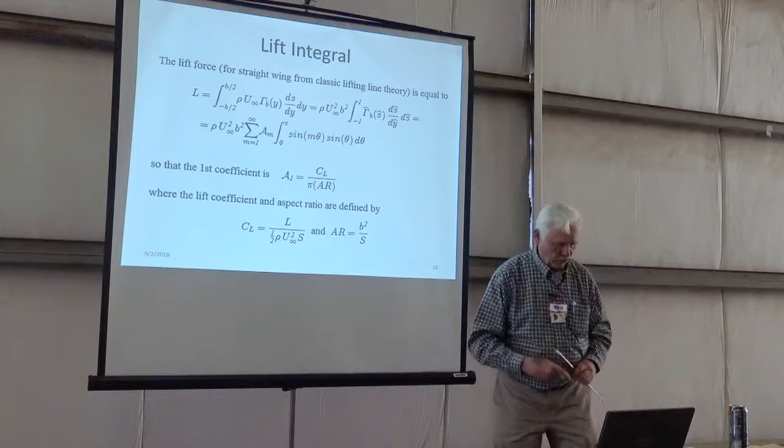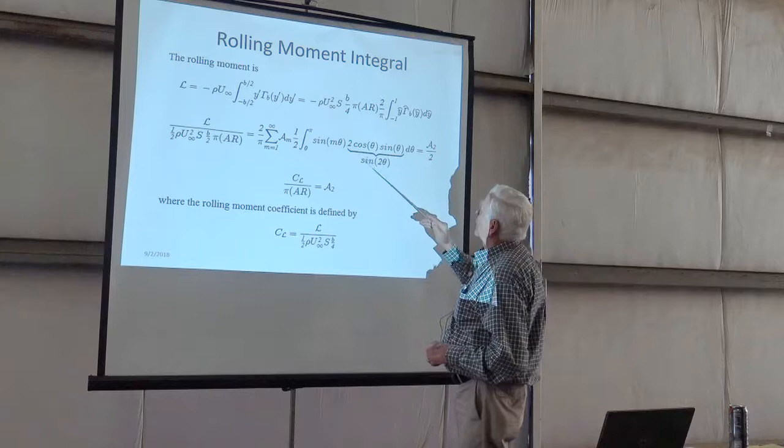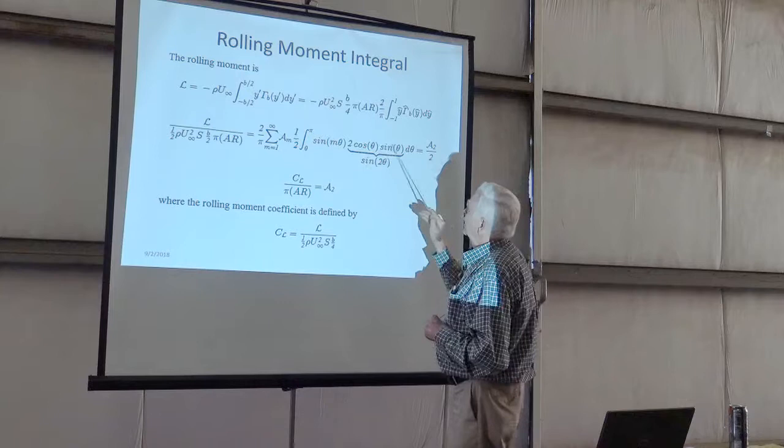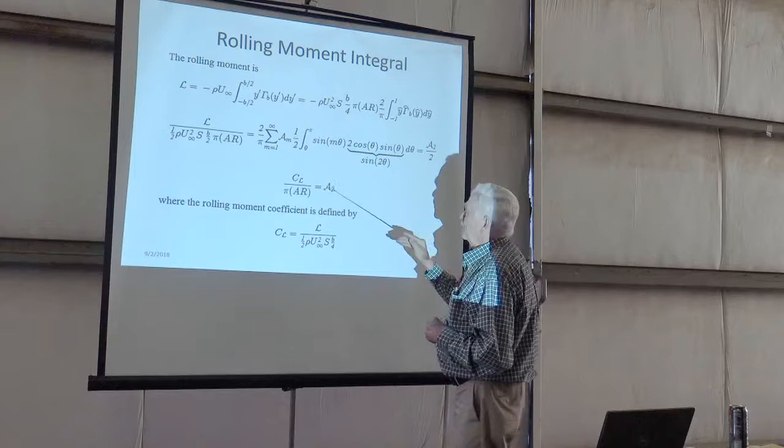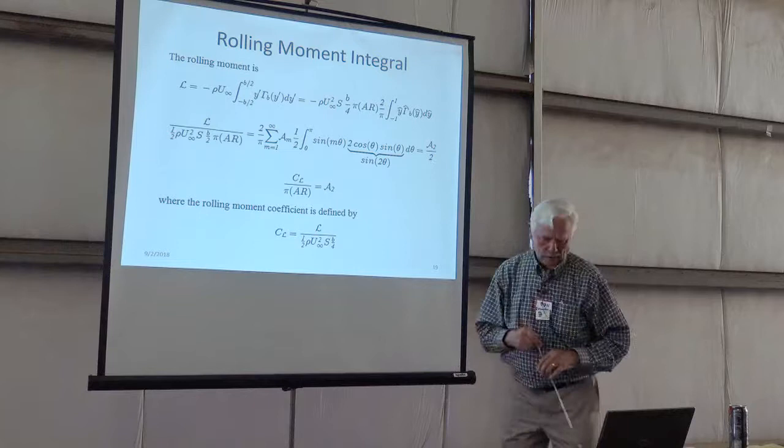Where the aspect ratio is b squared over s. And here's the lift coefficient. Rolling moment coefficient is similar. Except now it's the sine of two theta term pops out. All the other terms cancel out each other. But if m is equal to two, then this integral is non-zero. And so the coefficient for this A2 coefficient is the roll moment coefficient divided by pi aspect ratio.